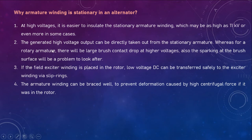For a rotating armature, there will be large brush contact drop at high voltages. Also, sparking at the brush surface will be a problem. When it is continuously rotating, sparking at the brushes may occur, so this is another problem of the rotating armature.